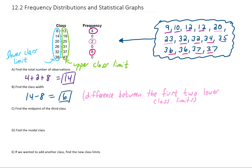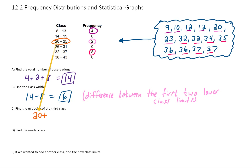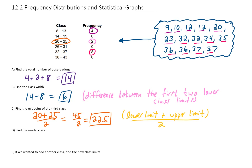Next, we want to find the midpoint of the third class. The third class is this one right here. If we want to find the midpoint of that class, we can take the lower class limit plus the upper class limit and divide by 2 — in other words, find an average of the upper and lower class limits. When I do that, I'm getting 22.5. The next question asks us to find the modal class, which is the class that has the highest frequency. The highest frequency is 8, so the modal class is going to be 32 to 37.